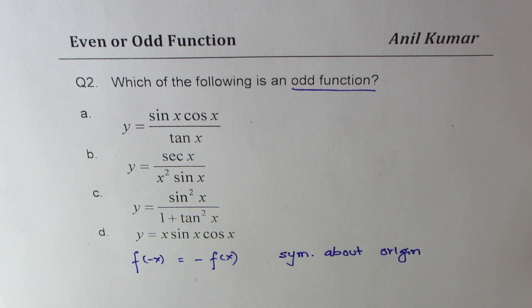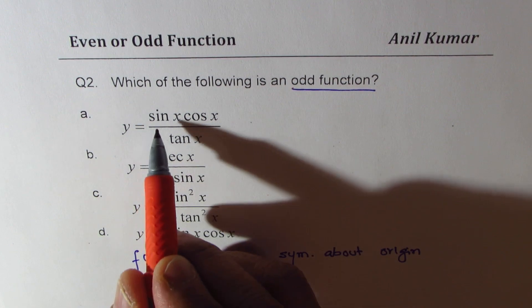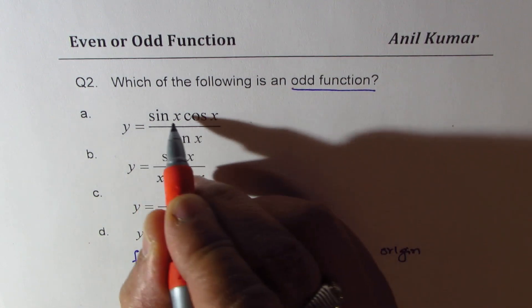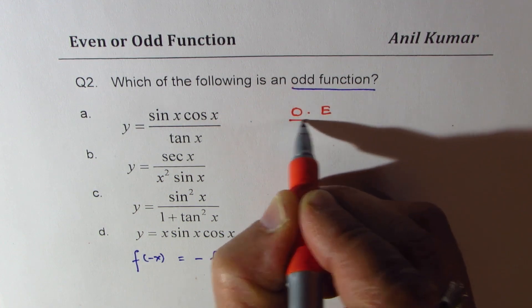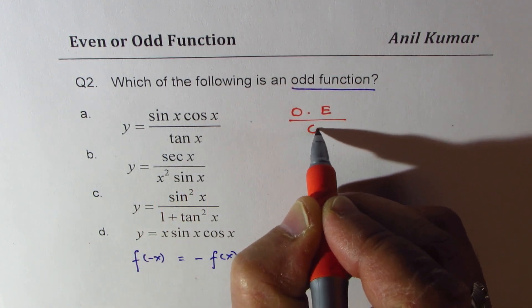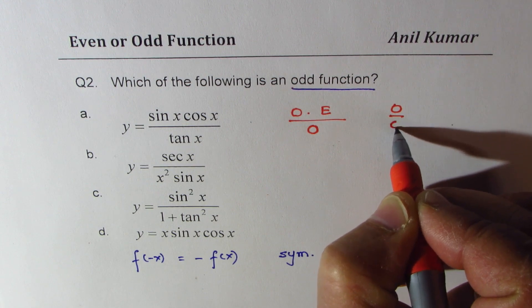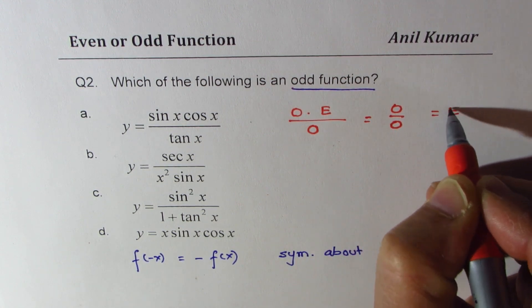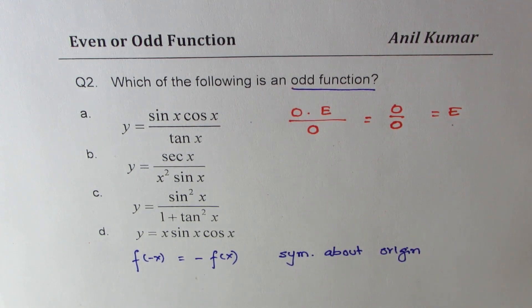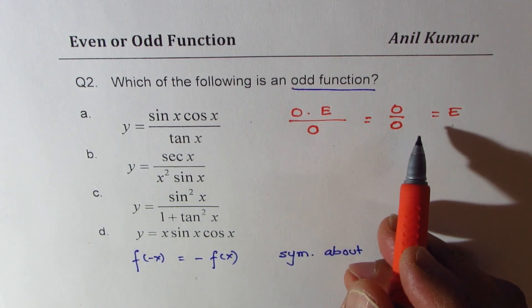Here is how we are going to work on this. We need odd. So what we have here is, sin x is an odd function multiplied by even, and we are dividing by an odd function. Do you see that? So we are getting odd over odd. Negative over negative, we will get positive even. Do you understand? That is not our answer.